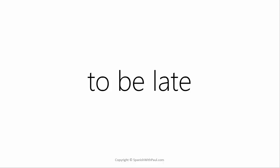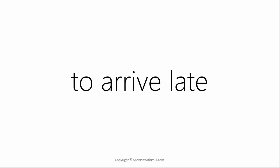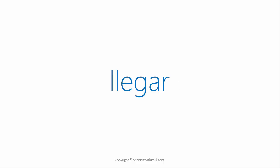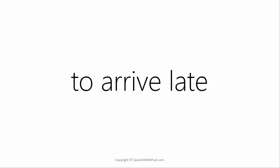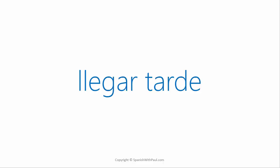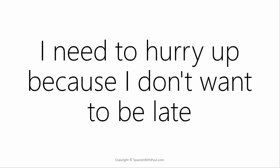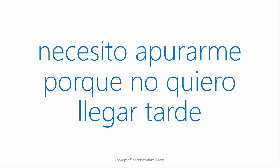In English we often use the verb 'to be' with the word 'late' — for example, 'I don't want to be late for the meeting.' However, in Spanish they don't do this. Instead, what they say is 'to arrive late.' What is the verb 'to arrive'? Llegar. How would you say 'to arrive late'? Llegar tarde. Now try: 'I need to hurry up because I don't want to be late.' Necesito apurarme porque no quiero llegar tarde.